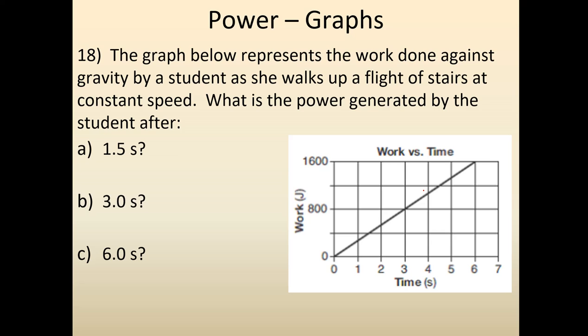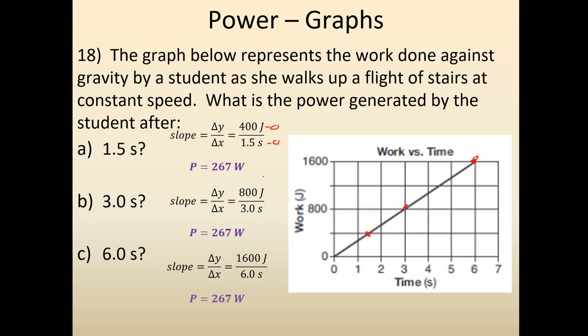Here's the last question — pause and work it yourself. They want the power at 1.5 seconds, at 3 seconds, and at 6 seconds. Since this is a linear line, the slope should be the same. Using the numbers to calculate slope — each minus the origin point — we end up getting 267, 267, and 267. So yes, the slope is constant at 267 watts. It's very basic and straightforward — plug and chug. The trickiest part is remembering that you don't need the explicit word 'work'; changing kinetic energy or changing potential energy can be plugged in to replace work.